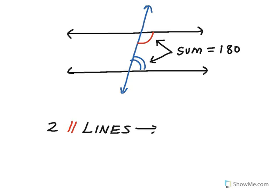So the property is when two parallel lines are cut by a transversal, that both pairs of same side interior angles are supplementary.